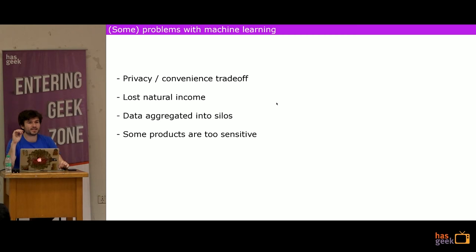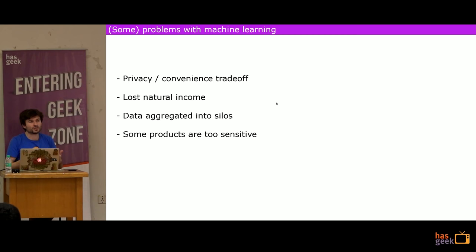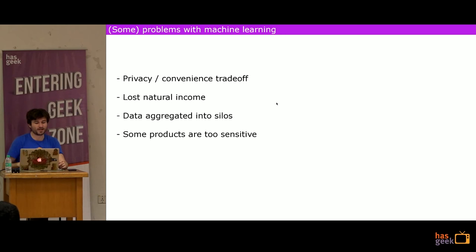The third problem is that data is aggregated into just a few very large data silos. Facebook and Google together accounted for something like 77% of all advertising income online in 2017. Advertising is the business model of the Internet, so these two companies soak up all the data, and a small number of people have ultimate control over that data — where it goes, what it's used for, who has access to it. This creates a big power dynamic where several companies have the most precious resource of the 21st century, which is data about people. Data is the new oil.